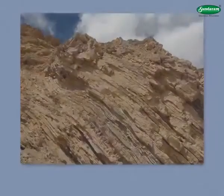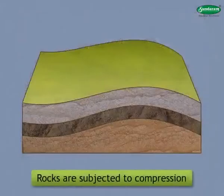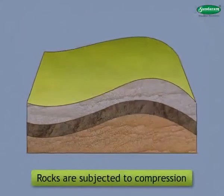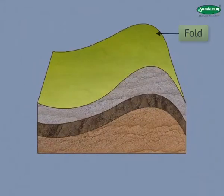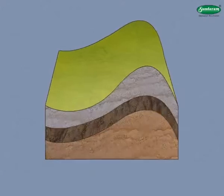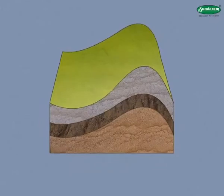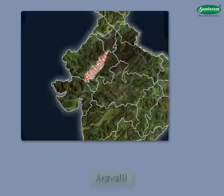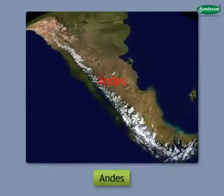Fold Mountains. Folded mountains are formed when soft rocks are subjected to compression. As a result, folds are developed. If the pressure is more, folds are large and acute. The layers of rock rise vertically and thus fold mountains are formed. Examples include the Aravalli, the Himalayas, Alps, Rockies, and Andes.